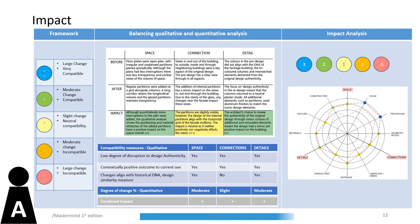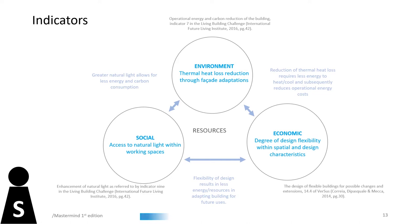There are three indicators in the sustainability domain utilised in the analysis. The environmental indicator concerns the reduction of thermal heat loss. The social indicator analyses the access to natural light. And the economic indicator considers the degree of design flexibility. These indicators are all intrinsically linked through the consideration of limiting of resources.